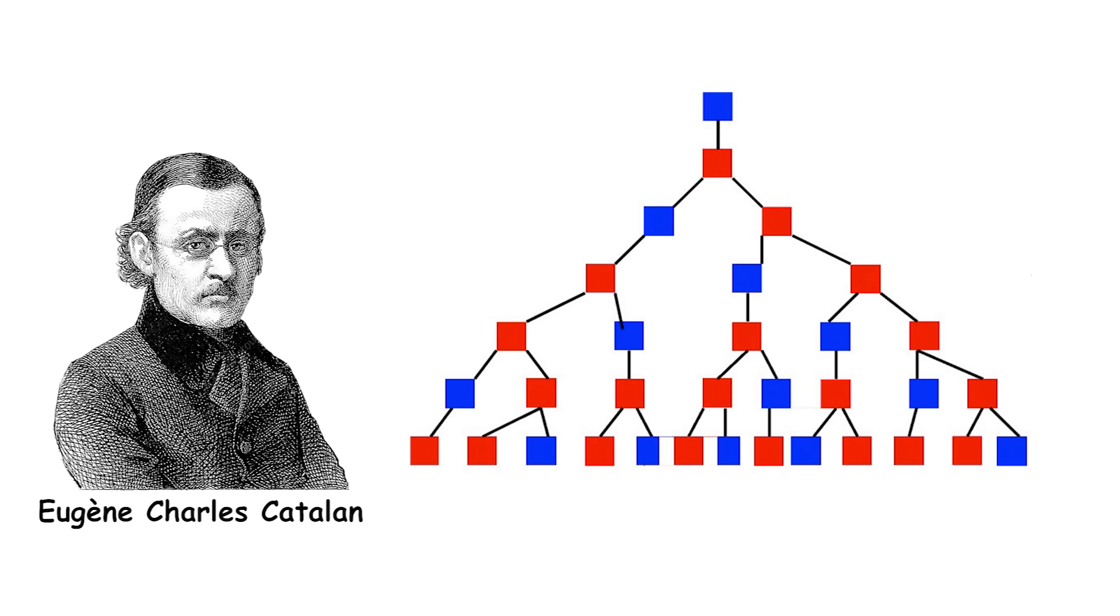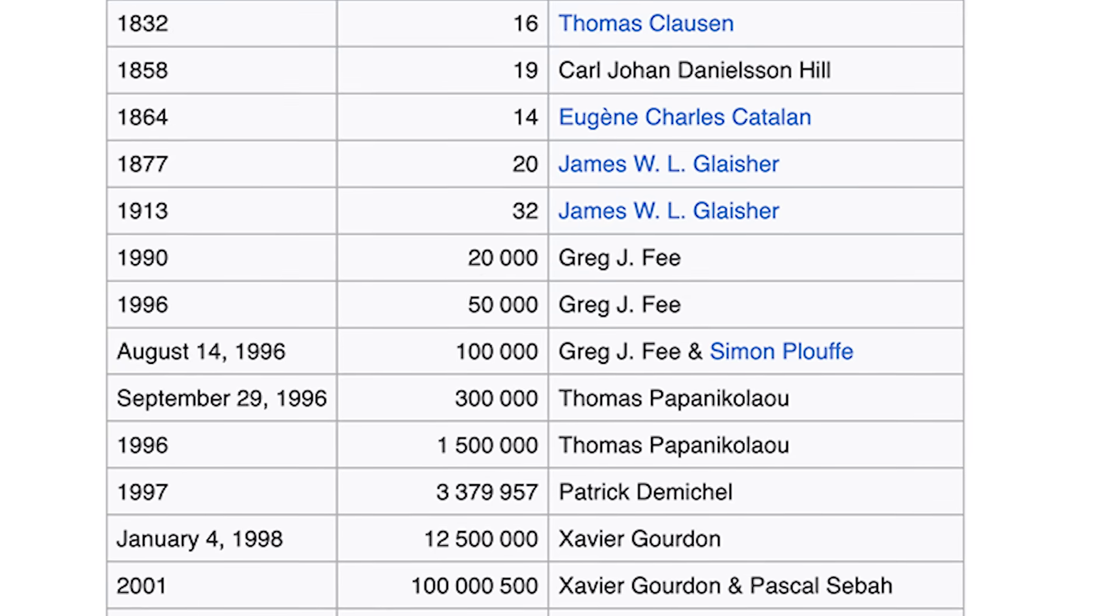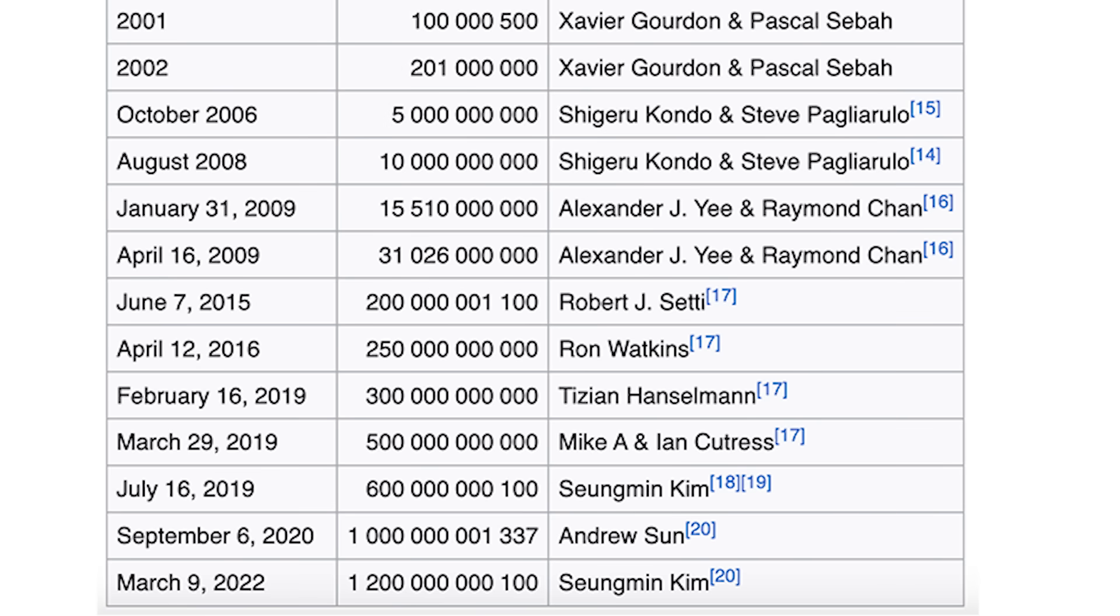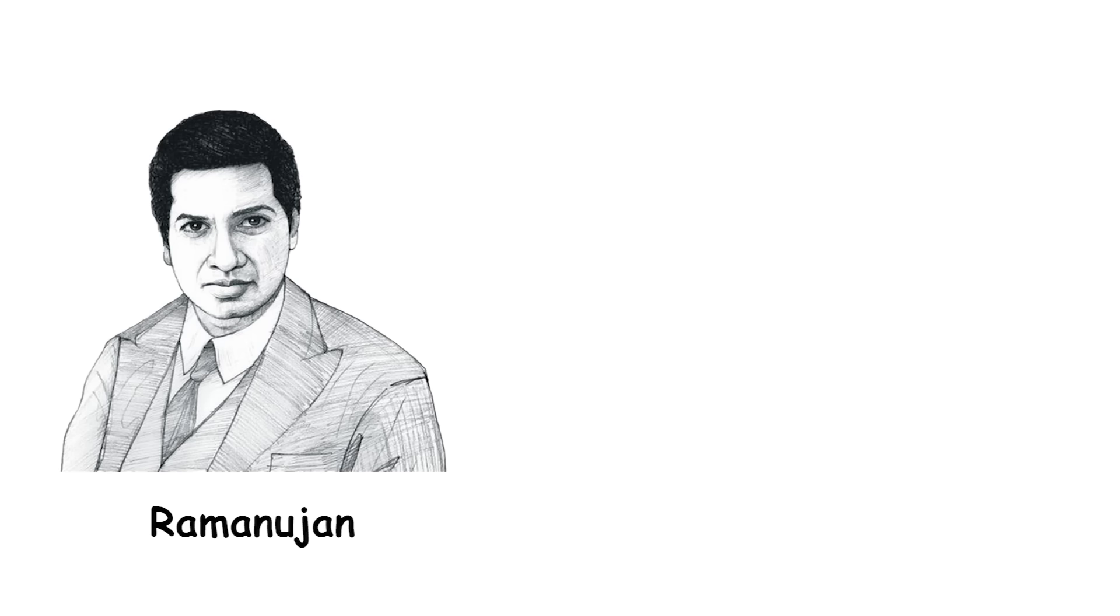Catalan's constant commonly appears in estimates of combinatorial functions and in certain classes of sums and definite integrals. It is not known whether Catalan's constant is a rational or irrational number, which is an open problem in mathematics. Over the years, the number of known digits of Catalan's constant has increased dramatically, from 16 digits in 1832 to over 1 trillion digits as of 2022. Efficient algorithms and formulas, such as those discovered by Ramanujan and Broadhurst, have enabled the rapid computation of Catalan's constant to high precision.